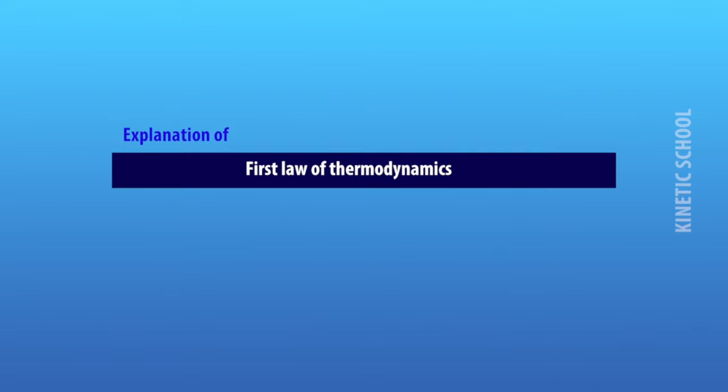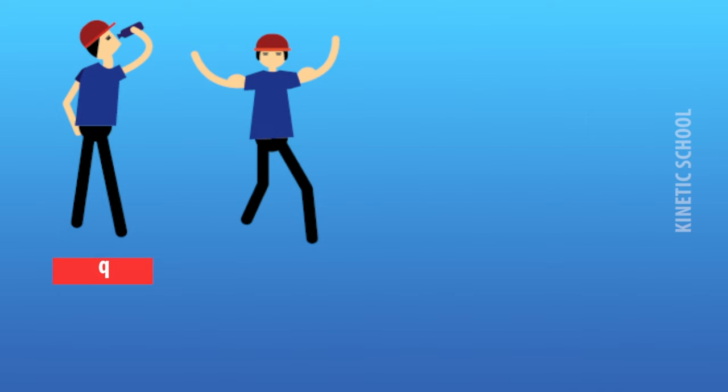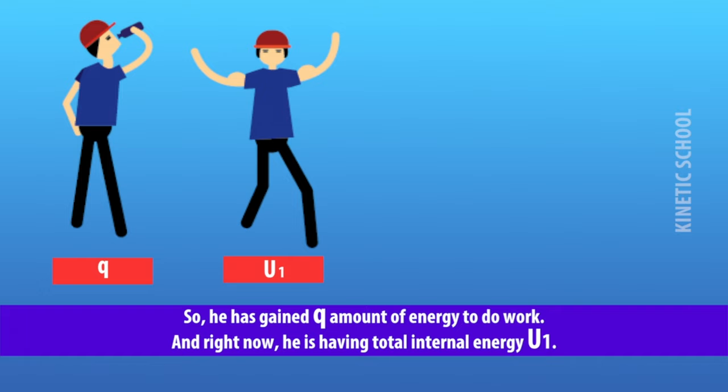Let's look at an explanation. If a boy takes an energy drink, then he gains Q amount of energy from it. That means Q amount of energy is entering his body. So he has gained Q amount of energy to do work, and right now he has total internal energy U₁.